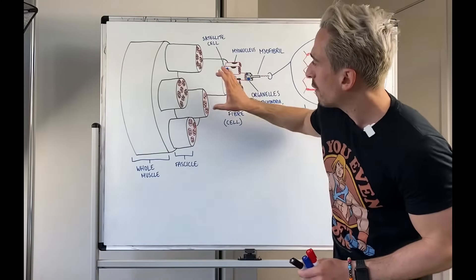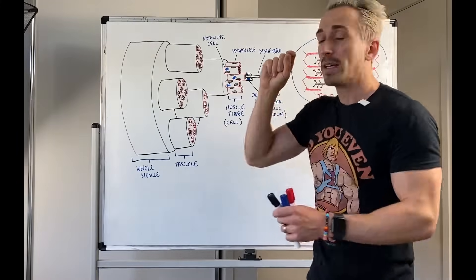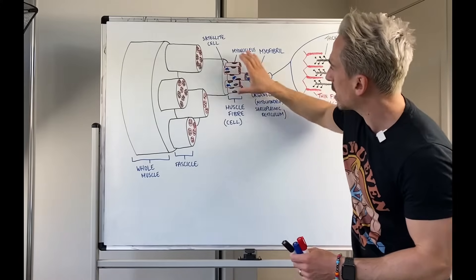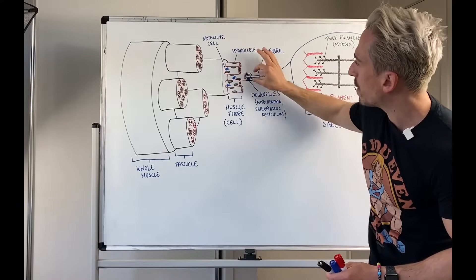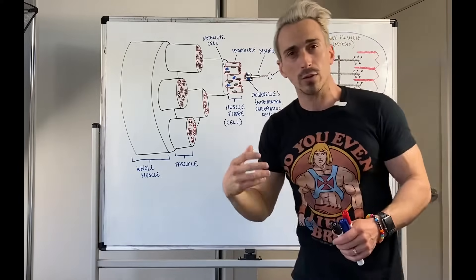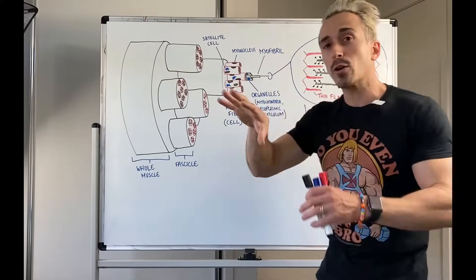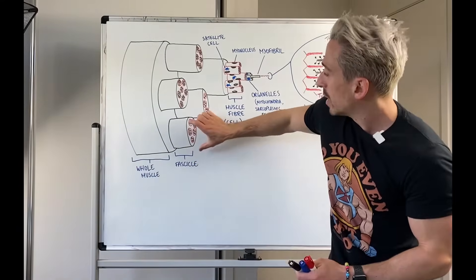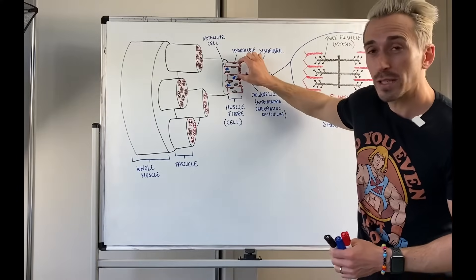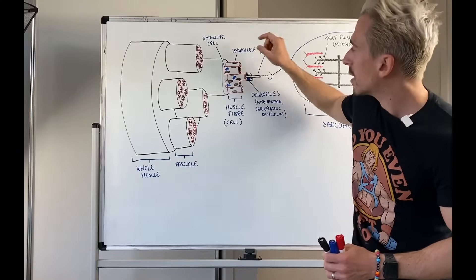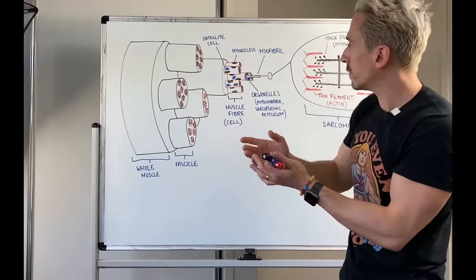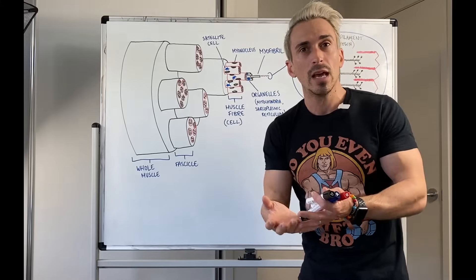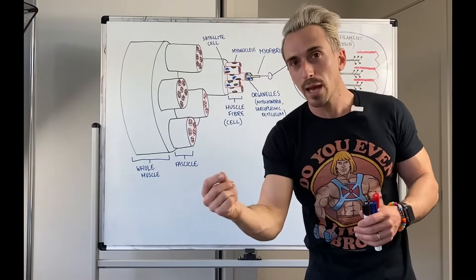Now you can see that within each fascicle we are going to have skeletal muscle cells known as muscle fibres. Now if I were to take one of these fascicles and pull out one of these muscle fibres, which we call a muscle cell, you are going to see a couple of things. Firstly, it's surrounded by connective tissue as well — so the whole muscle has connective tissue, the fascicle has connective tissue, and then the muscle fibre has connective tissue. Now this is called the endomysium, that connective tissue around the muscle fibre. And underneath that you've got the cell membrane, and we call this for muscle cells the sarcolemma.